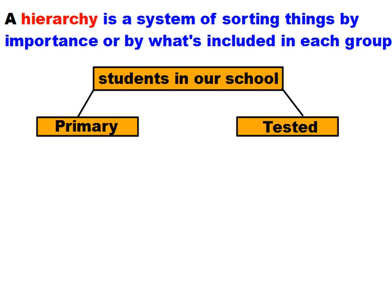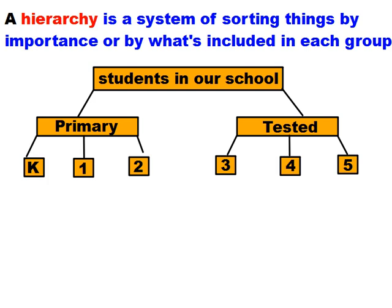But we could find some more subcategories, smaller groups, in which we could sort them. In our building, it looks kind of like this, divided by grades. So we've got three primary grades, kindergarten, first, and second grade, and we've got three tested grades in our building, third, fourth, and fifth grades.